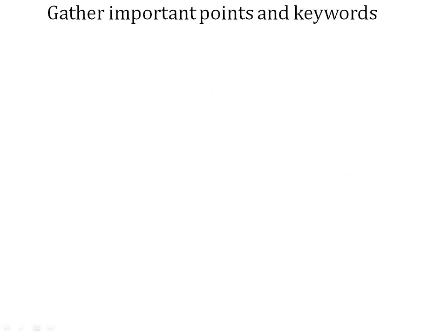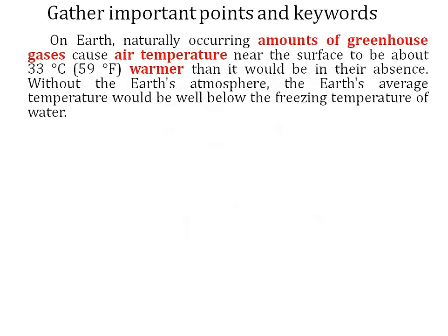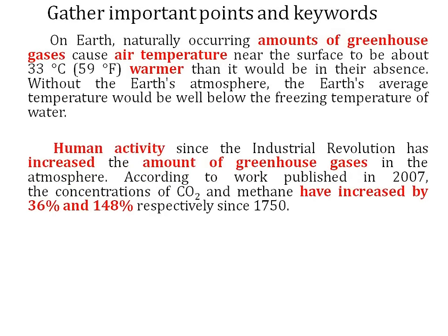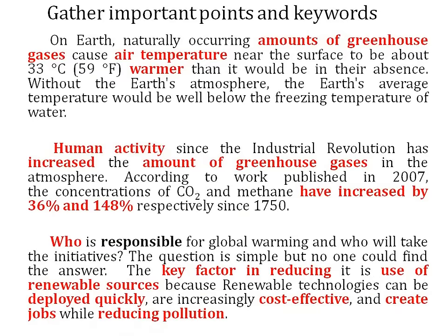So how to write the summary? First, try to gather important points and keywords such as: amount of greenhouse gases, air temperature, warmer, human activity, increased amount of greenhouse gases, increased by 36% and 148%, who's responsible, key factor, use of renewable sources. Identify keywords and gather important points. The important points involve the amount of greenhouse gases, human activity, and one solution — use of renewable sources. Make sure you mention all three aspects in your summary. If you mention only one aspect, you will lose marks in the content section.